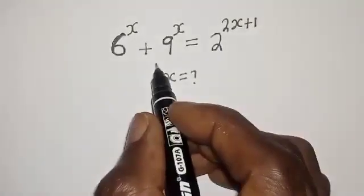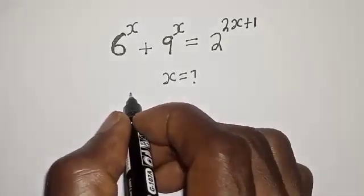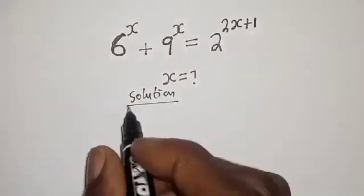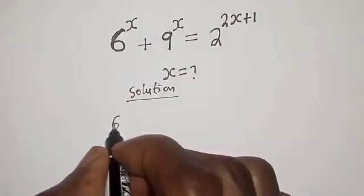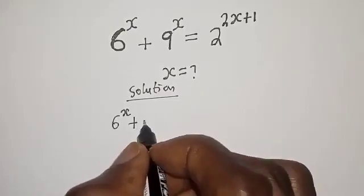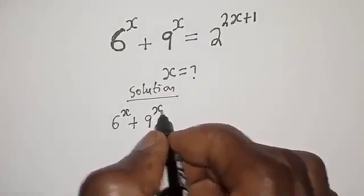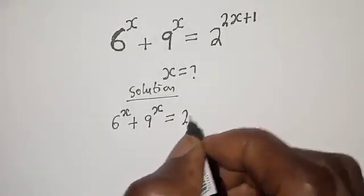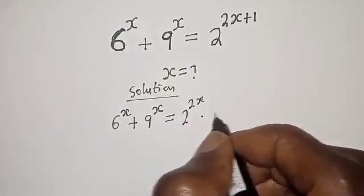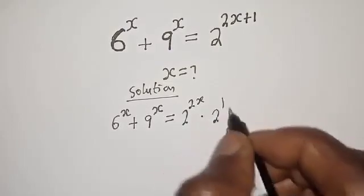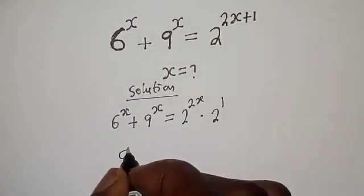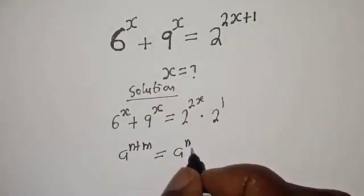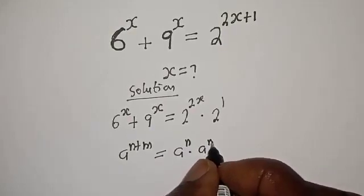Before we proceed, please don't forget to like, share, comment and subscribe. Solution. Here, 6 raised to power s plus 9 raised to power s is equal to 2 raised to power 2s plus 1, which can be written as 2 raised to power 2s multiplied by 2 raised to power 1.